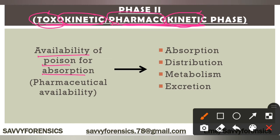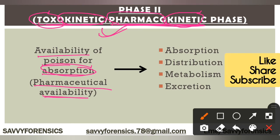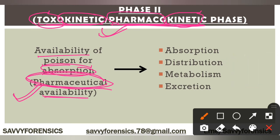So what happens is the absorption phase, which is Phase 2. We call this pharmaceutical availability — the poison being available for absorption. The body's reactions and internal processes begin here. The poison chemical is now ready for your body — absorption into your body begins.